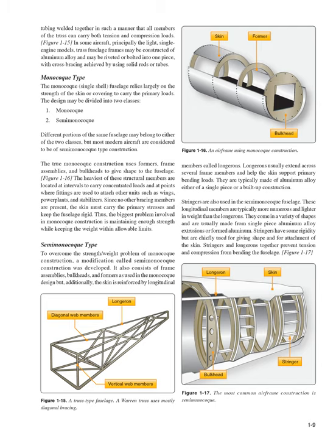The true monocoque construction uses formers, frame assemblies, and bulkheads to give shape to the fuselage. The heaviest of these structural members are located at intervals to carry concentrated loads and at points where fittings are used to attach other units such as wings, power plants, and stabilizers. Since no other bracing members are present, the skin must carry the primary stresses and keep the fuselage rigid. Thus, the biggest problem involved in monocoque construction is maintaining enough strength while keeping the weight within allowable limits. To overcome the strength/weight problem, a modification called semi-monocoque construction was developed. It also consists of frame assemblies, bulkheads, and formers, but additionally the skin is reinforced by longitudinal members that help the skin support primary bending loads.